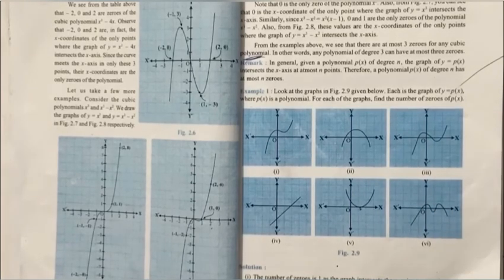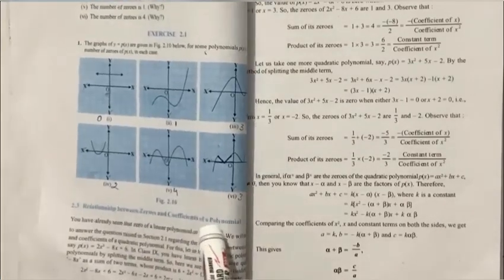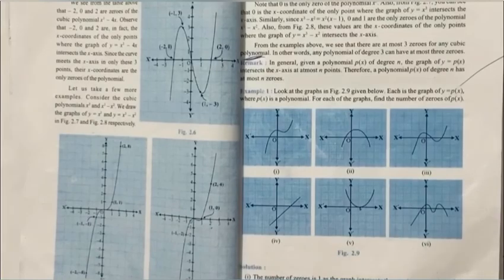Now this was all about today's lecture. You have to do Exercise 2.1 of NCERT, and in the next lecture we will discuss the relationship between zeros and the coefficients of a polynomial. So do watch the next lecture.